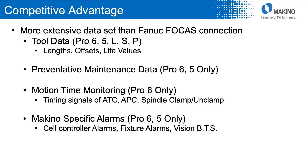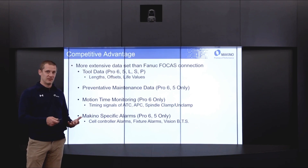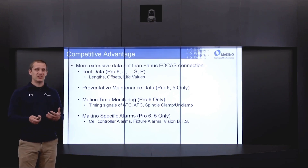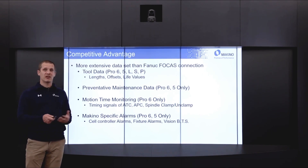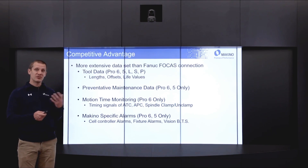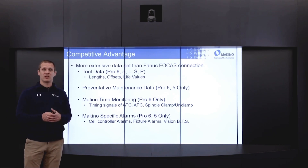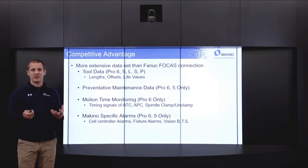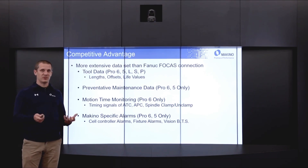One question I get frequently is why not just connect Makino machines with the FANUC FOCAS connection? The Makino Data Collector has an advantage over FANUC FOCAS — we're able to access additional information that a FANUC connection can't get. Things like your tool data on all the milling machines, your length and life values, your preventative maintenance data on some of our newer milling controls, motion time monitoring data which watches the timing of your tool changer, your pallet changer, spindle clamp, and Makino-specific alarms, notably in the cell controller space.